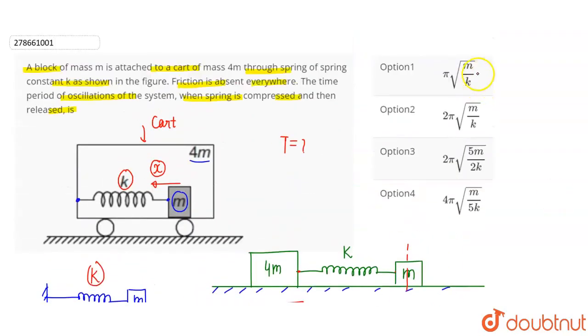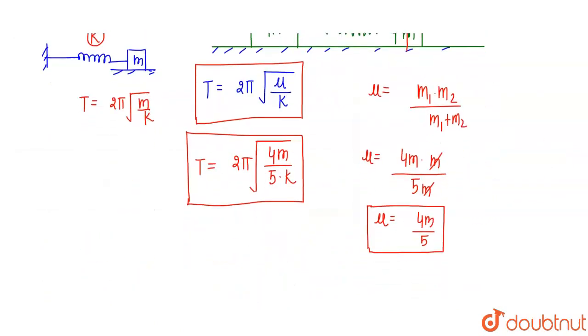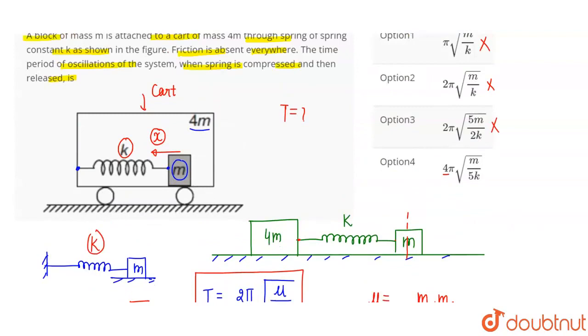Let's match our answer with the options. We have 2π under root 4 divided by 5K, which simplifies to 4π under root M by 5K. This matches option number 4. So this question's answer is option number 4, which is 4π under root M by 5K. Thank you.